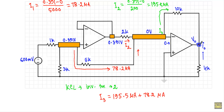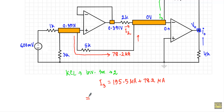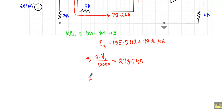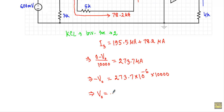I3 flows from the inverting terminal back to the output terminal of op-amp 2 through the 10kΩ feedback resistor. Assuming the inverting terminal is at higher potential and the output V₀ is at lower potential: I3 equals (0 − V₀) / 10,000. Substituting 273.7 micro ampere gives: 273.7×10⁻⁶ × 10,000 = −V₀, therefore V₀ equals minus 2.737 volt.